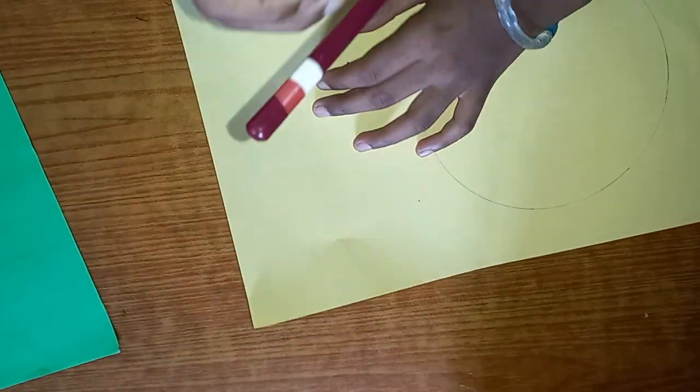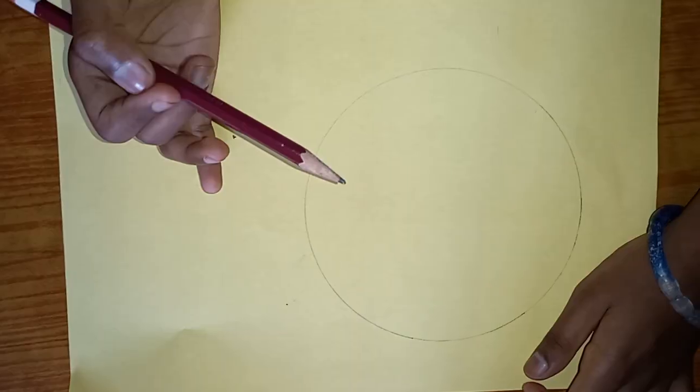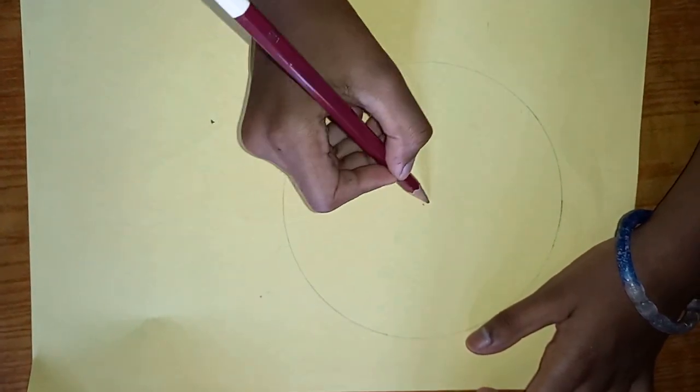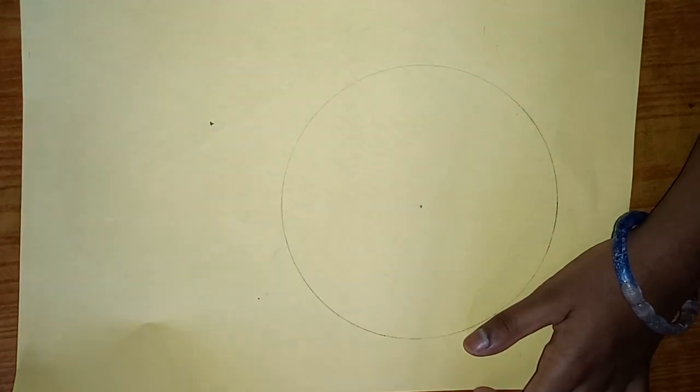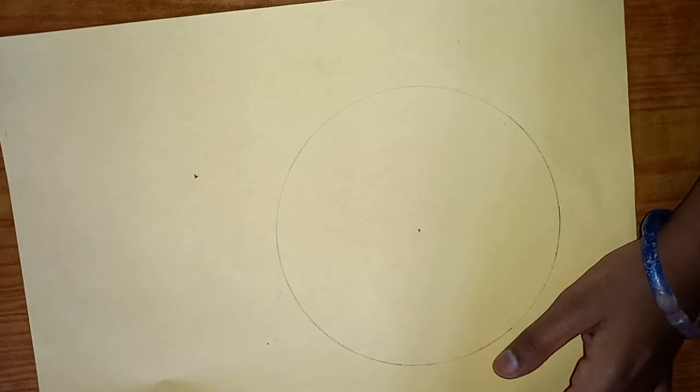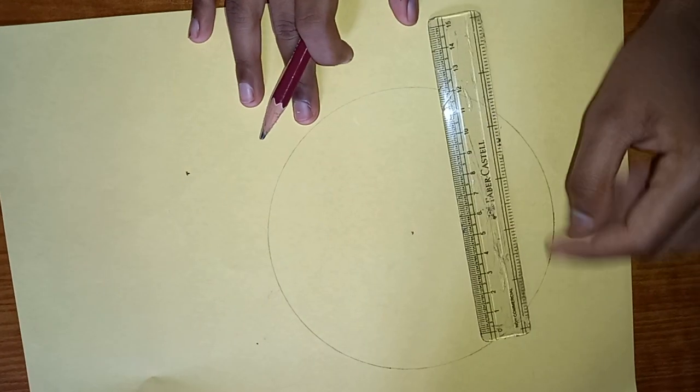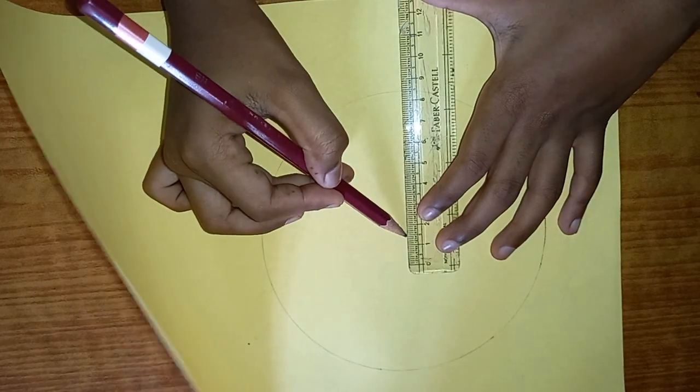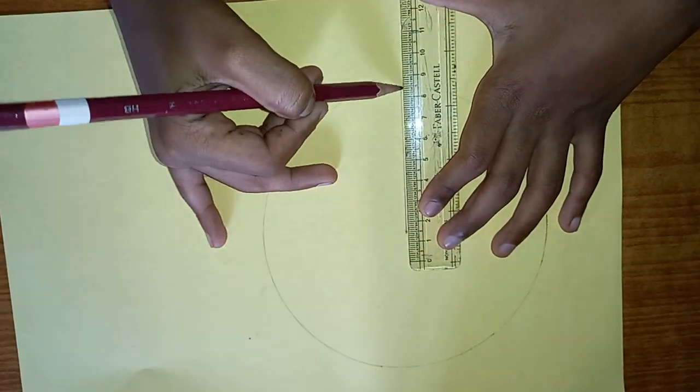And there you go. Now you're going to mark the center. You can also use some kind of circular object. Let's just use the compass and now you can take a scale if you need and draw a straight line just like this.